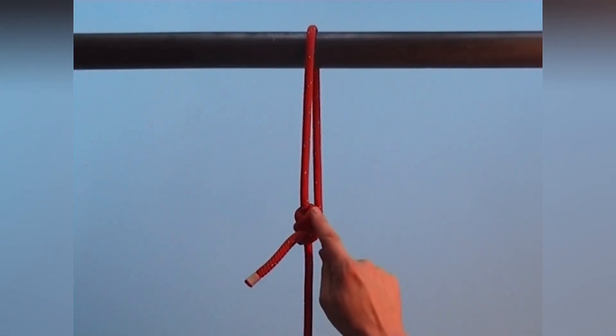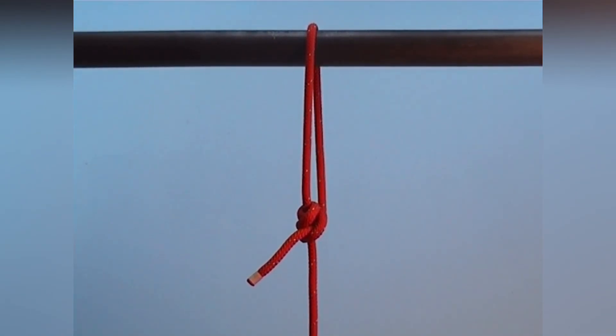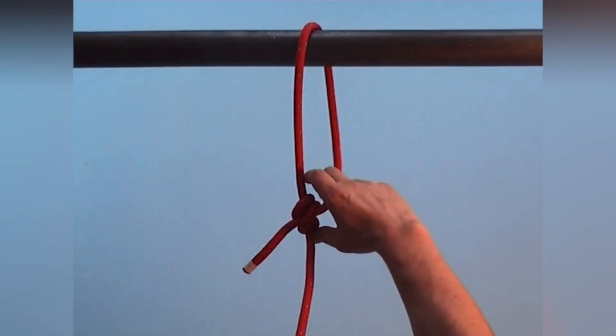The rolling hitch jams with strain and can't slip in this direction. If there is no load on the rope, it can be shifted in both directions.